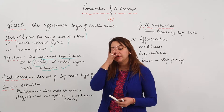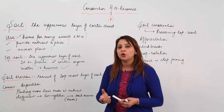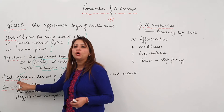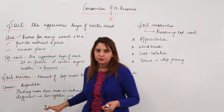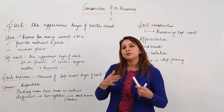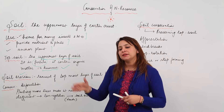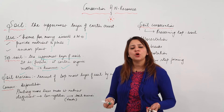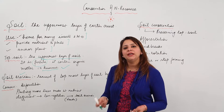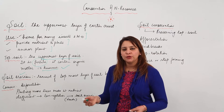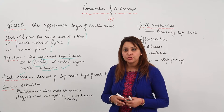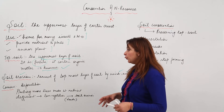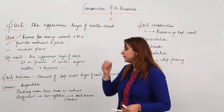Due to many activities, there can be a loss of topsoil, and this loss of topsoil is called soil erosion. Sometimes the topsoil is carried away by wind, water, and other factors. So the removal of topsoil due to any factor like wind or water is called soil erosion, and it is very harmful.